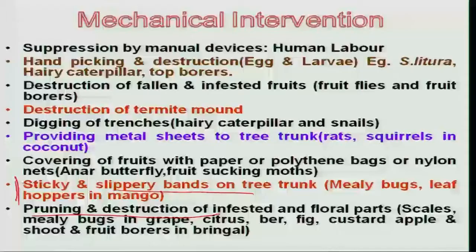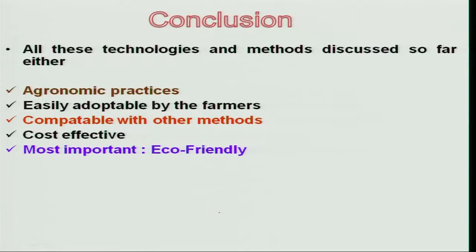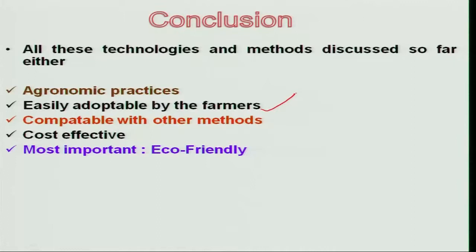To conclude, all these technologies and methods explained so far share one unique quality — they are basically agronomic and cultural practices already followed by farmers, having an impact on insect populations. They are easily adaptable by farmers and compatible with other methods of pest management. They are most cost-effective, highly economical, and most importantly, they are eco-friendly technologies which fit very well in the IPM component. Thank you.